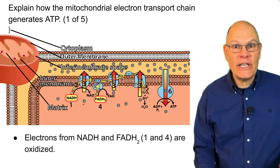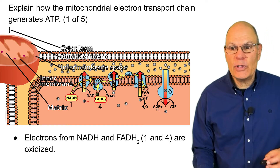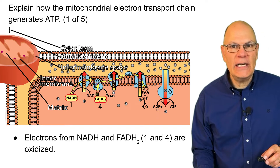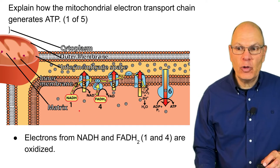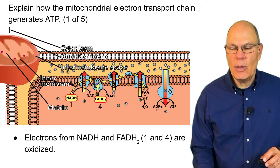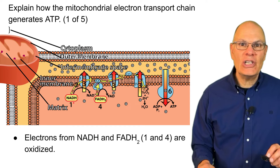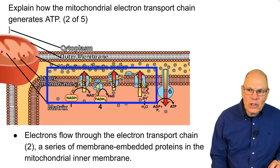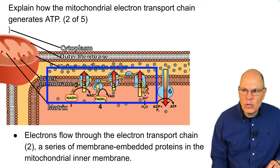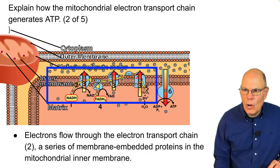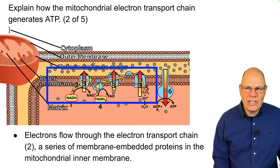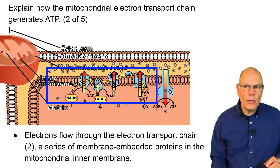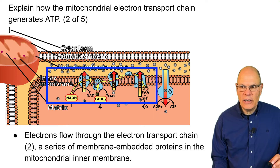In the previous phases of cellular respiration — glycolysis, the link reaction, and Krebs — we've been creating NADH and FADH2. Those are mobile electron carriers. They've been accumulating in the mitochondrial matrix, and they diffuse over to the inner membrane where they're oxidized. Oxidation is loss of electrons. Those electrons now flow through an electron transport chain — that's this yellow arrow over here — which is a series of membrane-embedded proteins in the mitochondrial inner membrane. It's as if there's an electrical current flowing along the mitochondrial membrane through these various proteins.